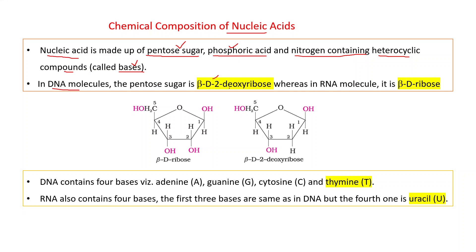In DNA molecules the pentose sugar is beta-D-2-deoxyribose, whereas in RNA molecules it is beta-D-ribose. If you compare the structures at the second carbon atom, one oxygen is less in the case of deoxyribose, and hence it is named deoxyribose. In ribose, oxygen is present at the second carbon atom, but in deoxyribose there is no oxygen at the second carbon.